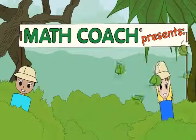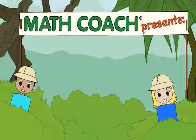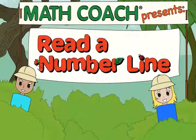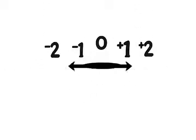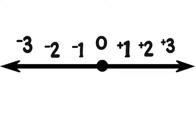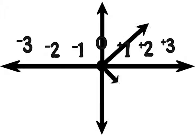Math Coach presents How to Read a Number Line. A number line shows numbers in order. A number line can go in any direction, but we most often use a horizontal one.